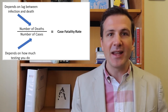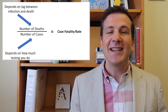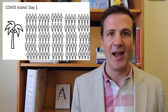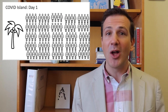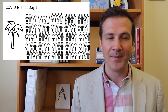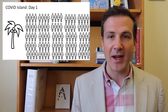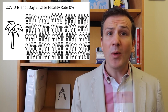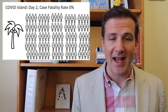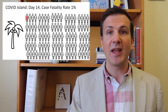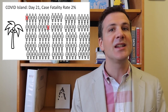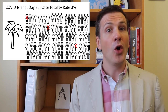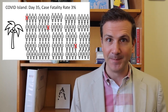Let's conduct a completely unethical experiment in our minds. Take 100 healthy individuals, isolate them on a desert island, and infect them all with SARS-CoV-2 on day 1. What is the case fatality rate on day 2 on that island? It's probably zero. No one has even developed symptoms yet — much less died. But over time, as people get sick and die, the rate climbs until it flattens out at some final number once everyone is either over the disease or dead from it.